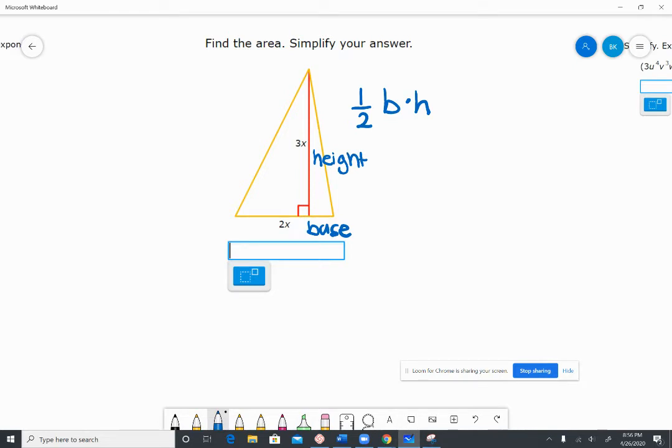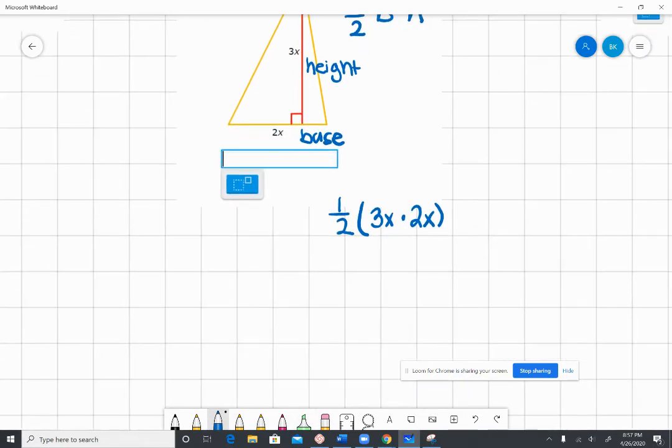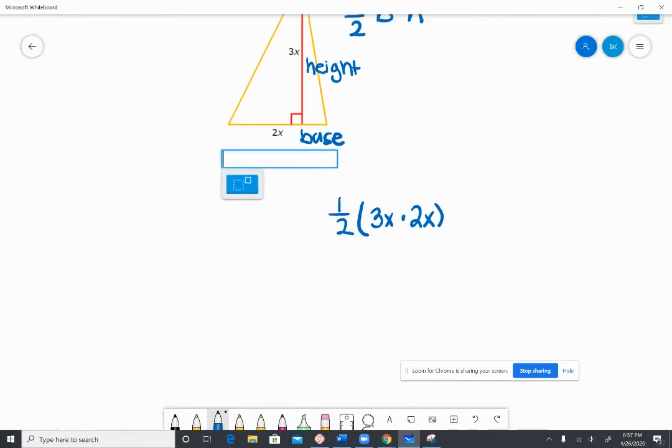And then this would be the height. So what it'll look like is one half 3x times 2x.